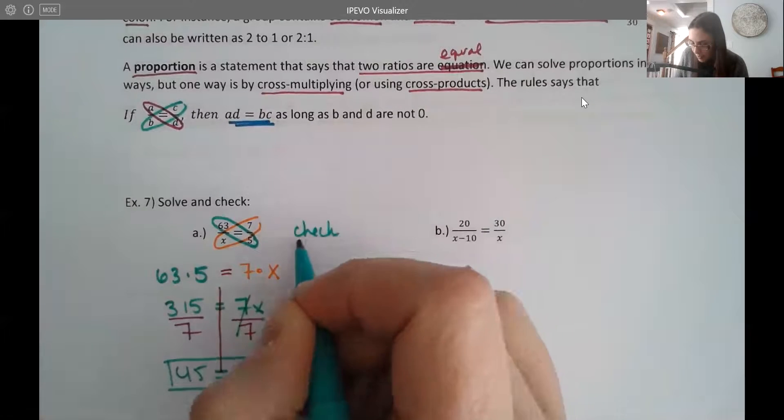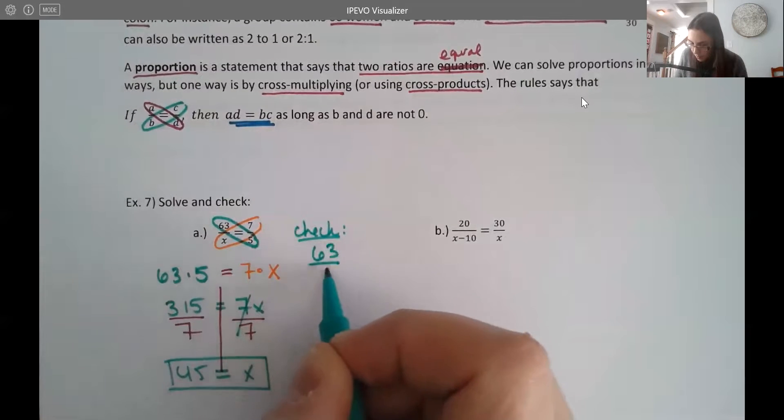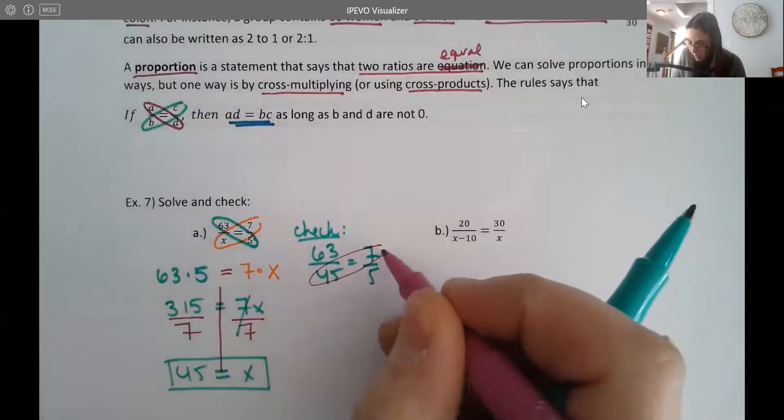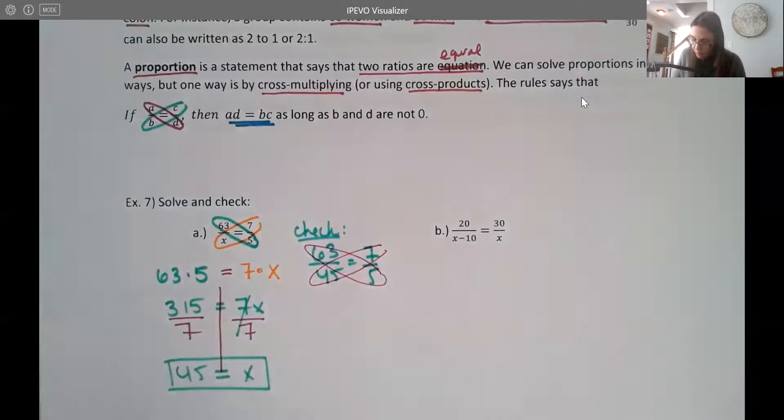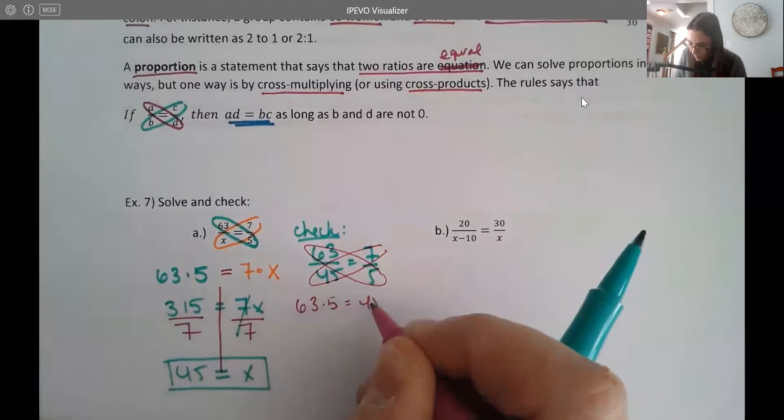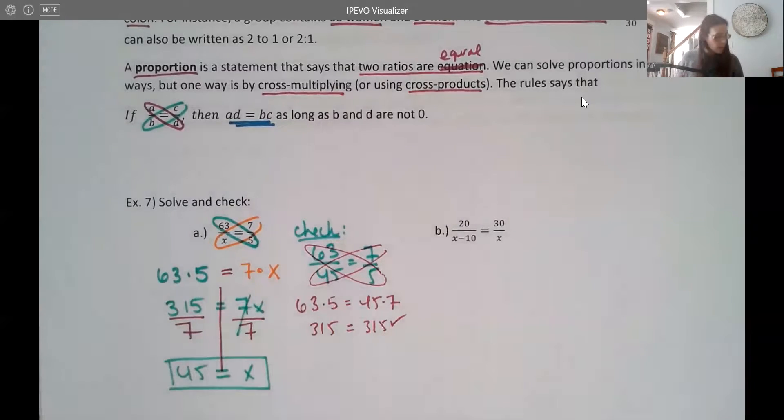And again, I'll just do one more check so you can see how it works. Now you just go back to your original problem. So 63 over 45 is 7 over 5. So you can check it also by cross multiplying if you want to. So you would get 63 times 5 equals 45 times 7, and you should see you get 315 equals 315. So it does check out.